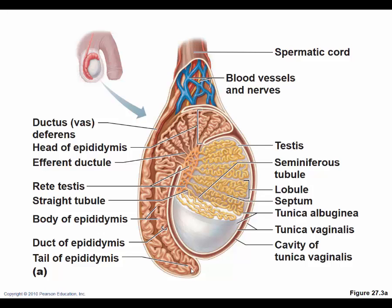If a man has a vasectomy — where the ductus deferens is cut — sperm are still produced but can't continue on the duct pathway. Those sperm get exposed to the body's tissues and immune cells, causing antibodies to clump the sperm together so they can't swim. This initiates an immune reaction that breaks through the blood-testes barrier.